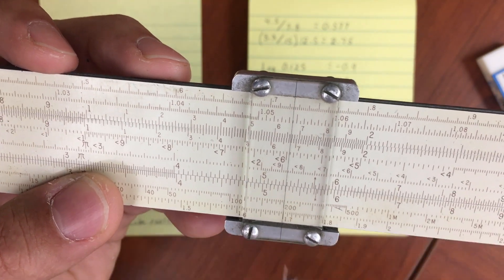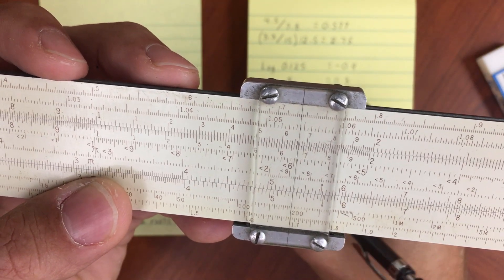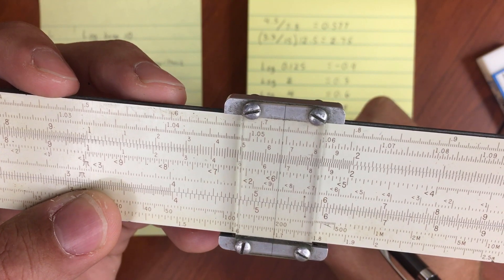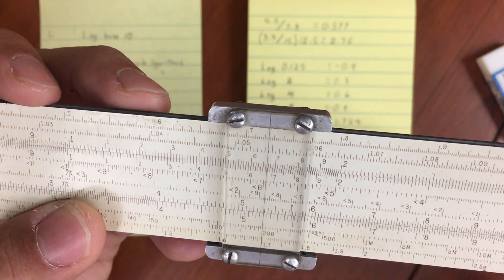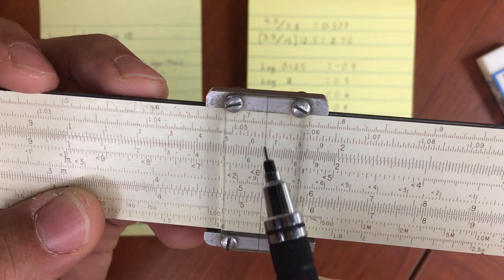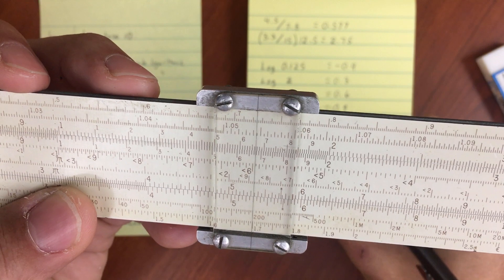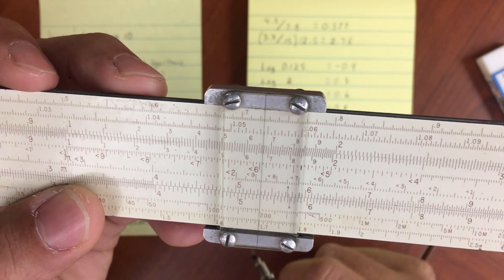If I had log of 530, then the same thing would be applicable. I would get point 724 when I look at this, but my answer would now be 2.724, and so on.